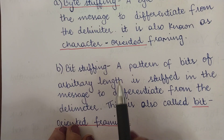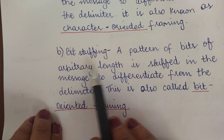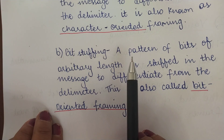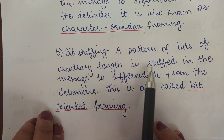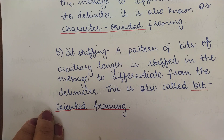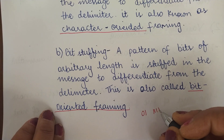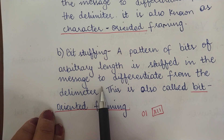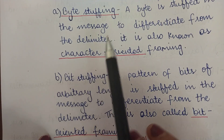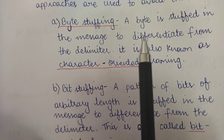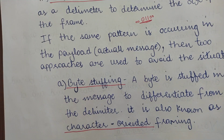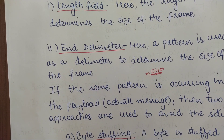Byte stuffing, also known as character-oriented framing, involves stuffing a byte — a collection of bits — into the message to differentiate it from the delimiter. If the same bit pattern appears in the actual message, extra bits are stuffed at the beginning or end of the message to avoid confusion with the delimiter bits. Bit stuffing, also called bit-oriented framing, involves stuffing a pattern of bits of arbitrary length — for example 0 1 1 1 1 1 — within the actual message to differentiate it from the delimiter. Both methods involve stuffing bits or bytes in the actual message to distinguish it from the starting or ending delimiter pattern.